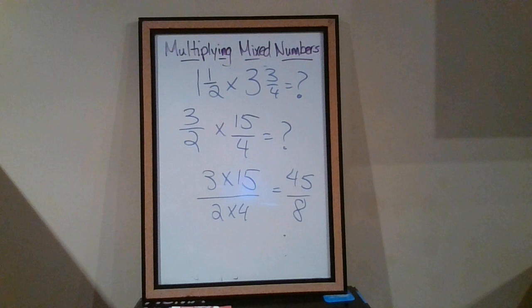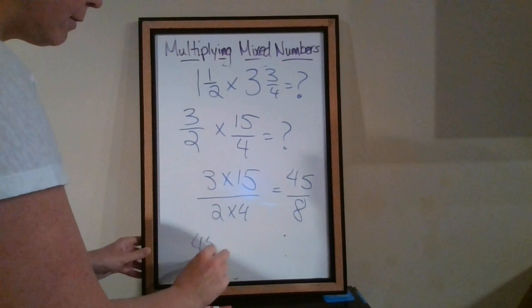I am going to simply change this into a mixed number. So I'm going to ask myself, how many times does 8 go into 45? Well, I know that 8 times 5 is 40, and 8 times 6 is 48. So 6 would be too much.